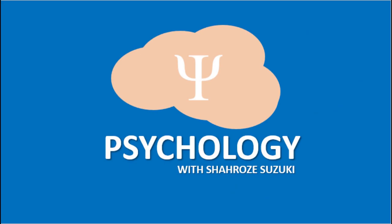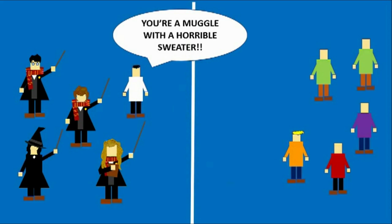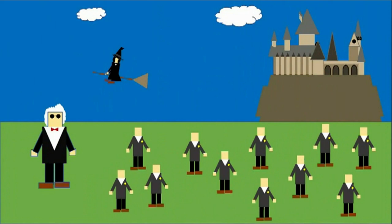This categorization of people into different groups caused them to discriminate against one another. To find out why, Tajfel conducts two experiments. For both experiments, he chose 64 school boys from a common school house. This was important as it meant that the boys knew each other well beforehand, and some were even friends.